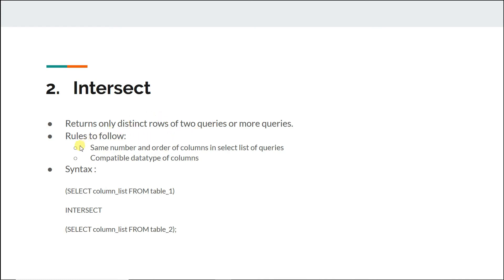Now we'll talk about INTERSECT. The syntax is the same as union, just replacing UNION with INTERSECT. The tricky part is that INTERSECT is not available in MySQL — it exists in SQL Server and possibly other databases but not in MySQL. However, the result of an intersect query can be emulated in MySQL. Let me show you an image to explain.